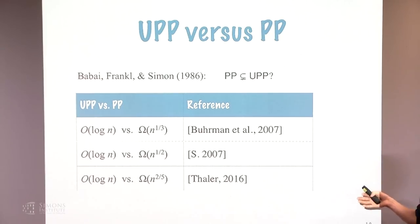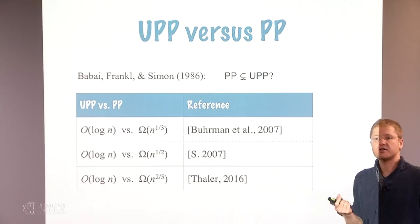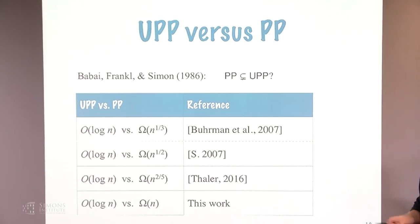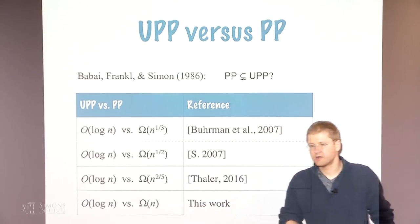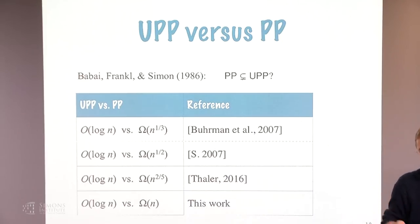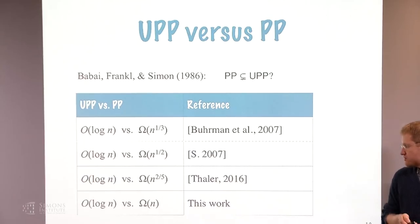In recent years the separating function has been simplified — Justin Taylor gave a beautiful separation where the function is a decision list, computable in AC0 with very small depth. This work achieves the largest possible separation of log N versus N, a polynomial improvement on previous constructions and as bad as it can be: the unbounded error communication complexity is log N while the weakly unbounded error complexity is as large as possible. This extends to three or more parties via the pattern matrix method.